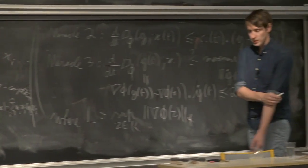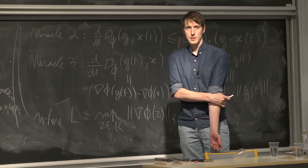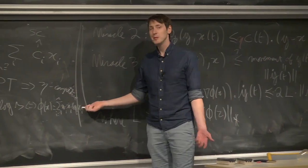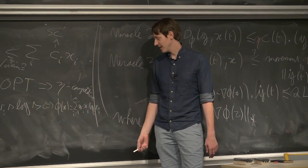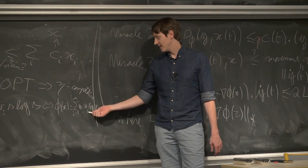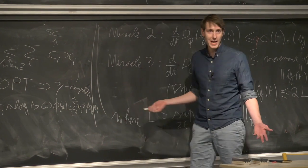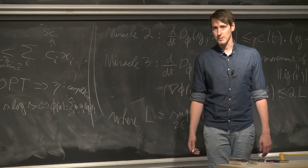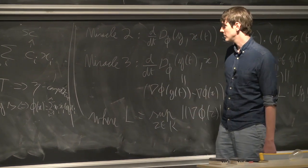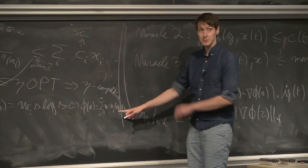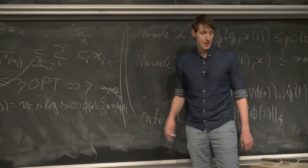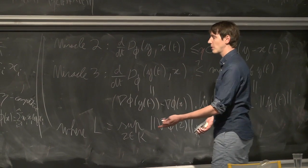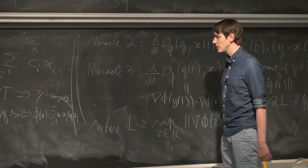The problem is the Lipschitz constant is infinite. The gradient of this phi is log(x), and log(x) at zero is minus infinity. So this is not Lipschitz. And there's a very good reason — it's no surprise if you know about online learning: multiplicative weights only has a regret guarantee. It does not have what's called a shifting regret guarantee; it cannot track an optimum.